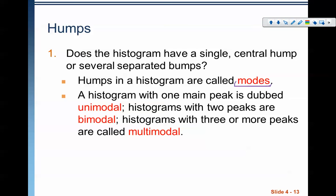A hump is a mode. It is that third measure of central tendency, the mode. Now, we have different names for different types of histograms. If the histogram has one main hump, it is dubbed unimodal. Uni meaning one.